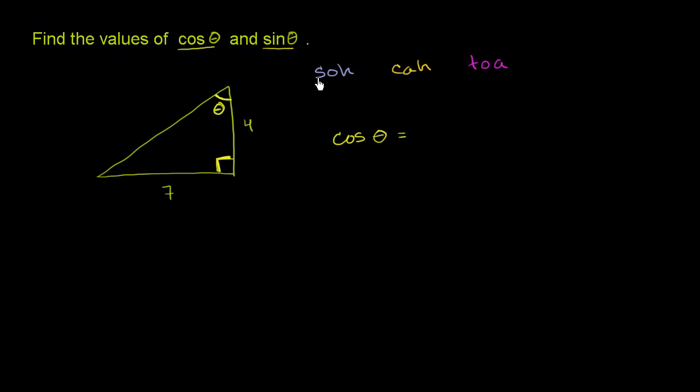This defines sine. That's why we have the S. This defines cosine. That's what starts with a C. This defines tangent. That's why it starts with a T. So if you look at CAH, it says that cosine of an angle is equal to the adjacent side over the hypotenuse.